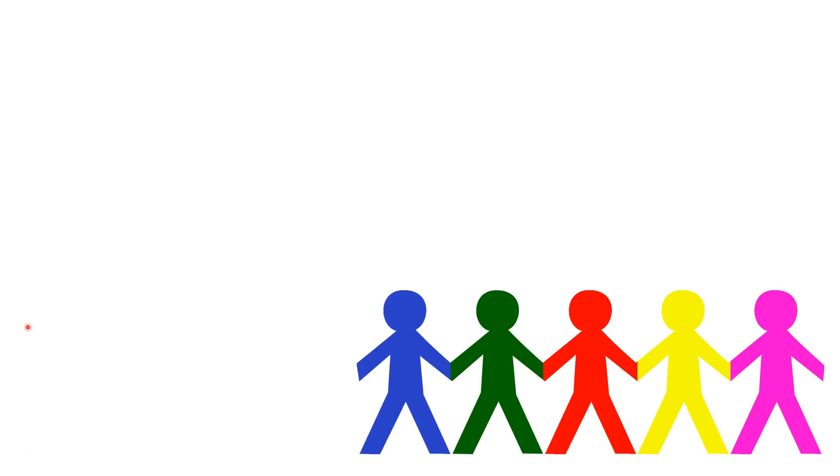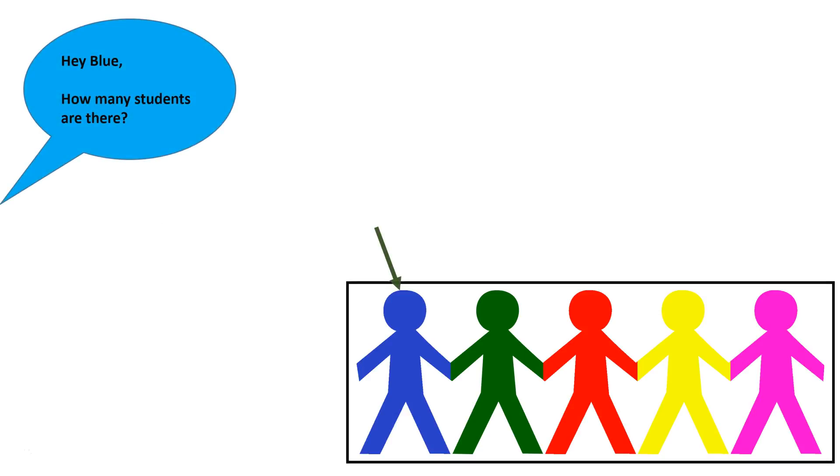Let's imagine that we have a line of school children that we want to count. The teacher asks the student at the end of the line, Blue, how many students are there? Blue could handle this problem iteratively, like with a for loop or a while loop, and go through and count each student individually, and then respond with the total.